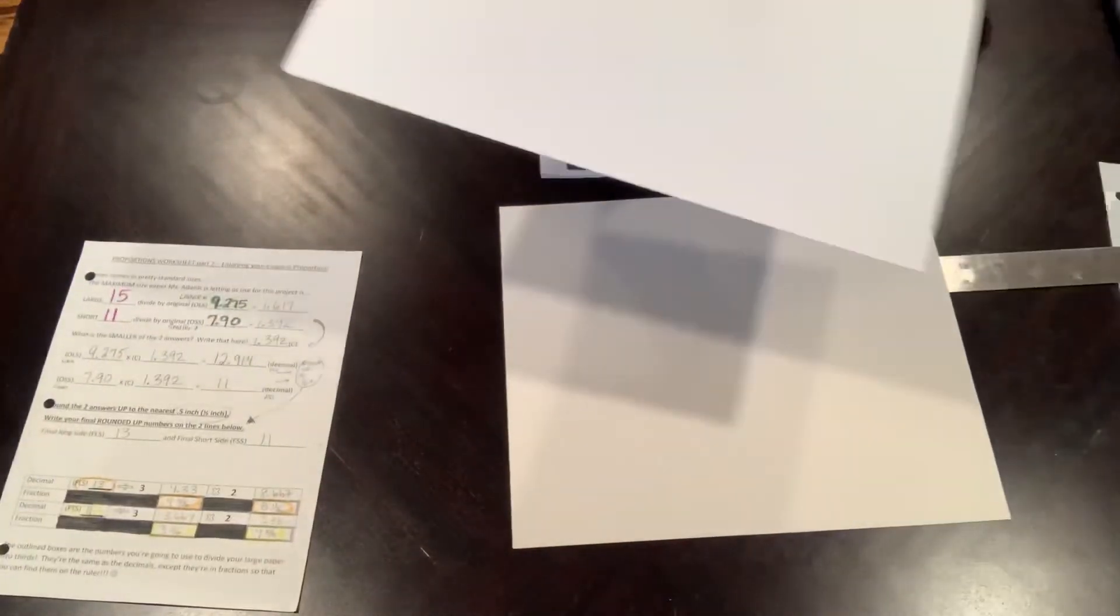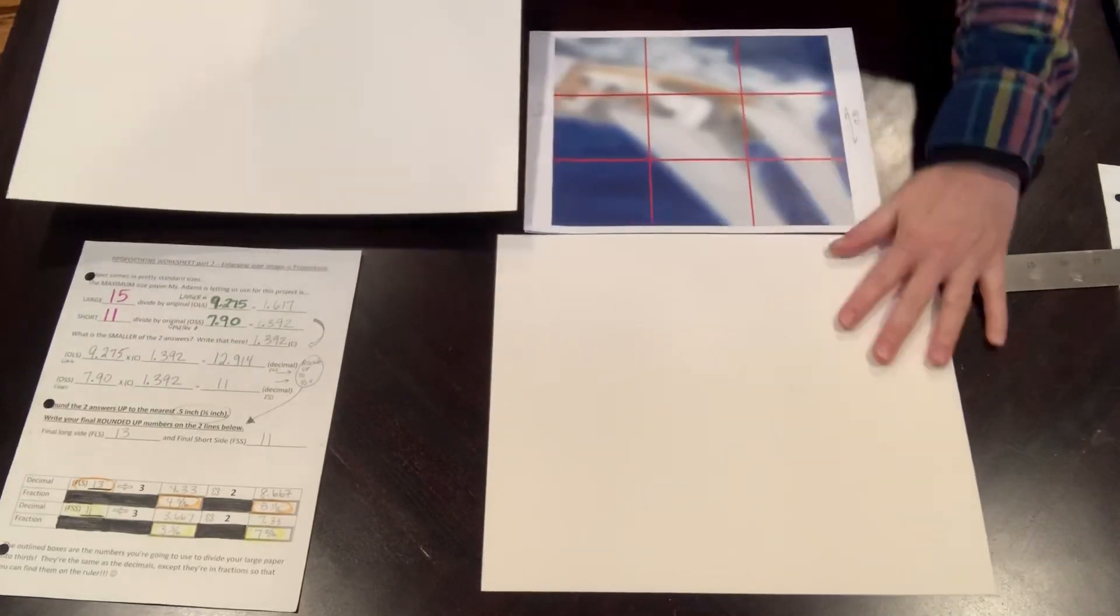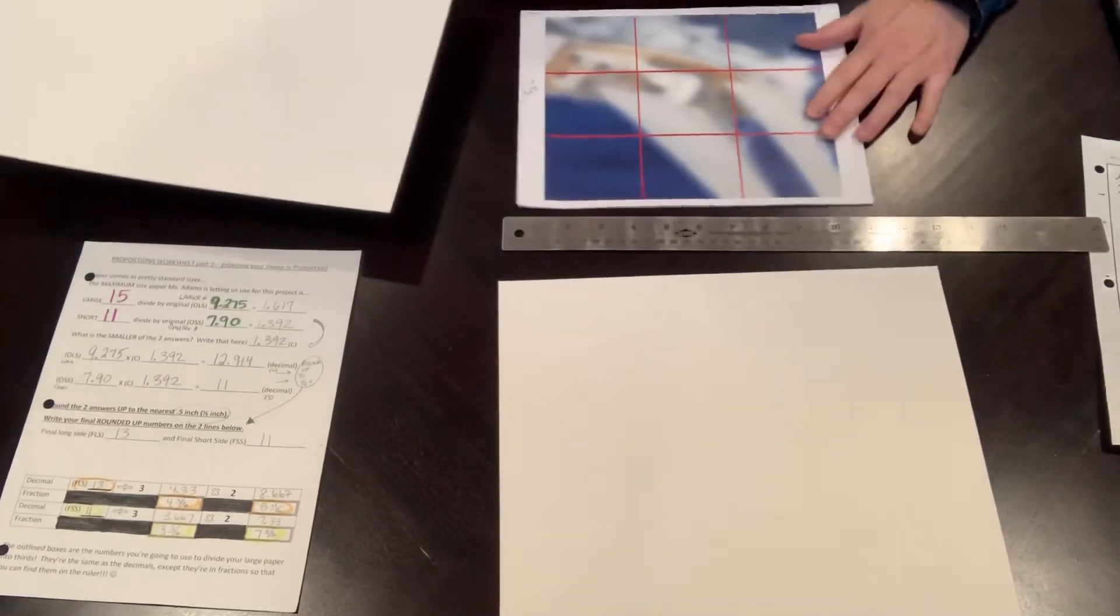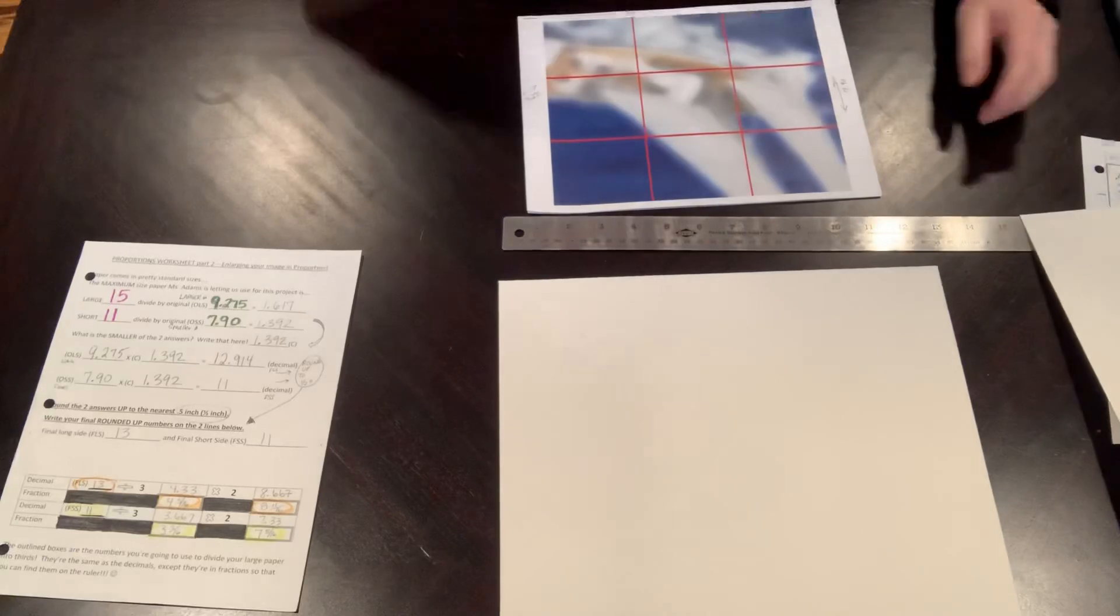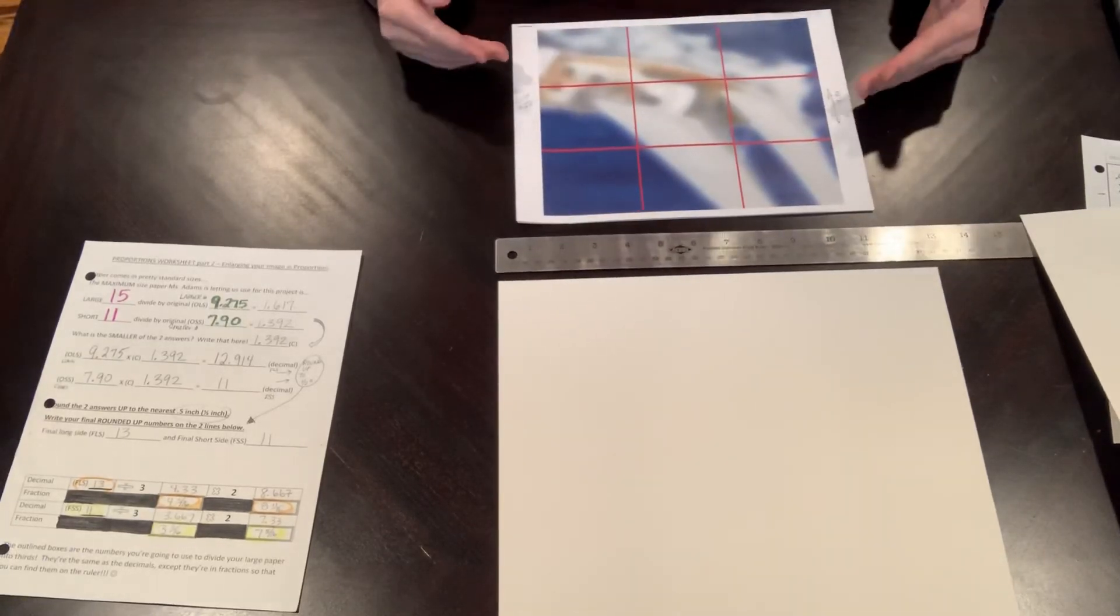This is definitely more in proportion to this image than this sheet of paper. The next part we'll be drawing our rule of thirds grid.